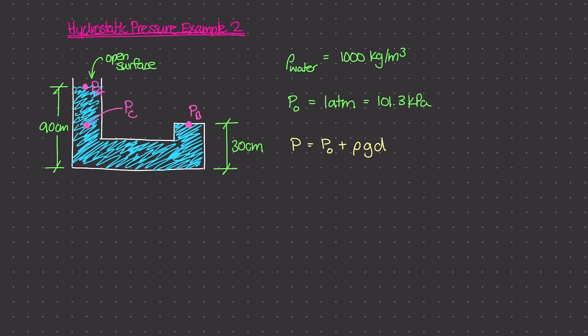So the pressure that we're really interested in is point C, and that is going to be equal to this P₀ value. Now, P₀ is P_A, right? That's the pressure at the open surface right here. And P₀ or P_A is really just that 101.3 kilopascals, this value right over here. And we're going to add to that this ρ times g times d. Okay, so let's start plugging this in. And P_C is equal to P_A, which is 101,300 pascals.